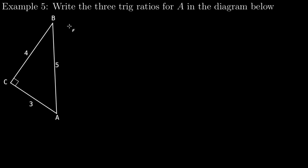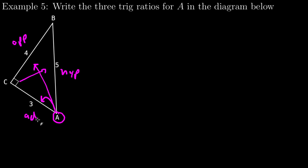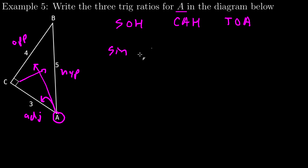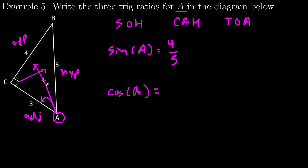Write the three trig ratios for A. Label my sides: across from C is the hypotenuse, across from A is the opposite leg, and the leg next to A is the adjacent leg — between my given angle and the right angle. Using SOH-CAH-TOA: sine of A equals opposite over hypotenuse, 4 over 5. Cosine of A: adjacent over hypotenuse, 3 over 5.